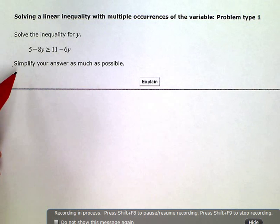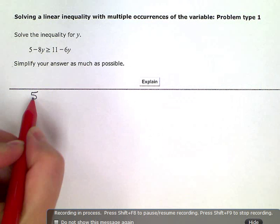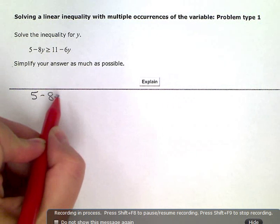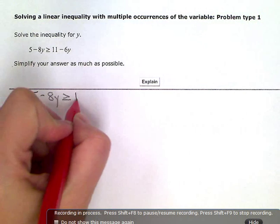So, I'm going to rewrite this. 5 minus 8y is greater than or equal to 11 minus 6y.